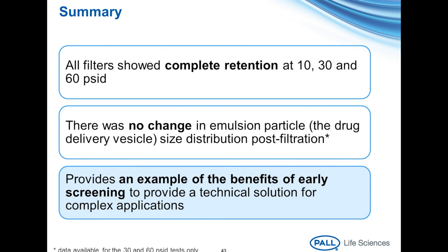In summary, we have shown an example of an early screen of a representative drug delivery vehicle using a single-pass small-volume challenge. All filters showed complete retention at 60, 30, and 10 PSID, and there was no change in emulsion particle size distribution. This early screen is a critical step, particularly in the development of a nanoemulsion drug delivery formulation and the evaluation of the proposed manufacturing process prior to finalization. It is very helpful when eventually moving towards successful validation of the final manufacturing process.